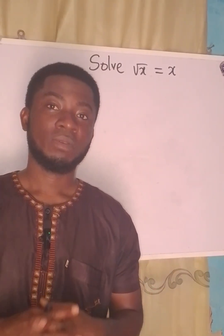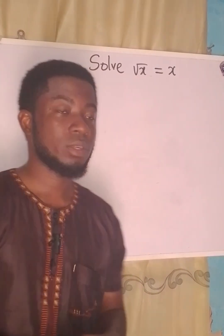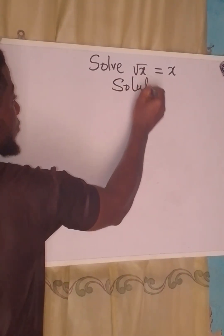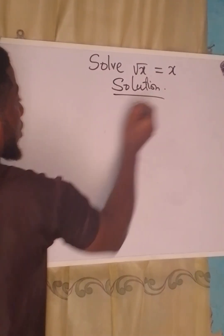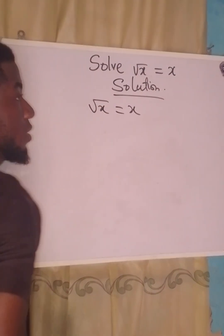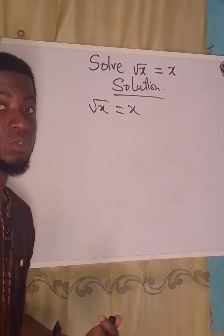Hello everyone, let's solve the problem on the board very quickly. Solution: we have square root of x equals x. Now our next target is to remove the square root.